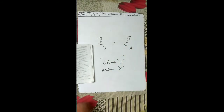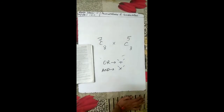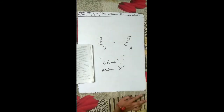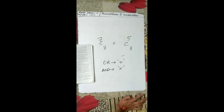What is the number of ways of choosing 2 red cards from a pack of 52 cards? You will choose 2 cards from 52, so that is 52C2.